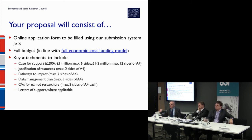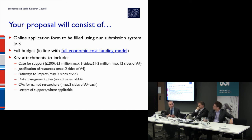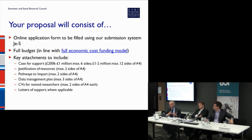There are a number of attachments to the online forms, and these are actually the core of your application — they contain what will be scrutinized by the panel. The single most important document you need to start working on is the case for support. The length depends on the size of your request: if your proposal is under one million pounds, it's up to six pages A4; if it's over one million pounds, it's up to 12 pages. It needs to be well structured and well articulated.